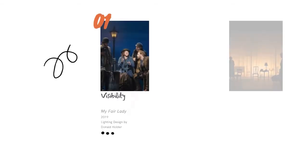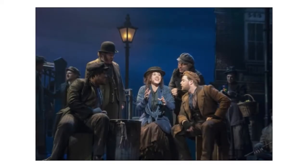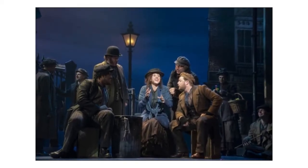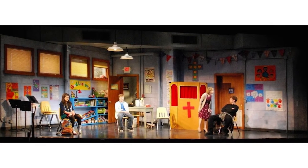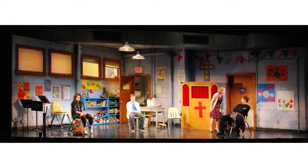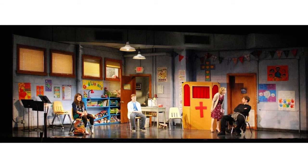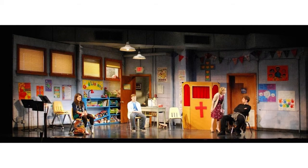Let's take a look at a few examples. If the first function of stage lighting is visibility, then this design by Donald Holder for My Fair Lady really makes the point. There is a street lamp in this night scene, but that light by itself wouldn't be nearly enough to see the actors' faces, so extra light has to be added to make them visible. The next function is plausibility. In this design for Hand to God by Jason Lyons, the design helps us believe that the reality presented on stage takes place in the basement of a church. Think about the overhead lighting that might exist in a basement classroom, or the light coming from windows on the side from outdoors. Really, what's on the other side of those windows is just a blackened theater, so think about what the designers have to do to make the reality that the world outside actually exists plausible.